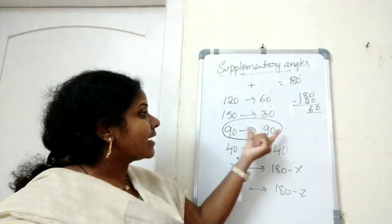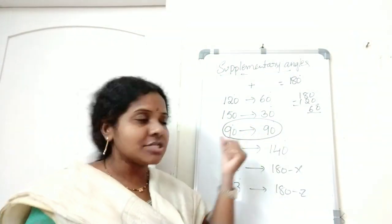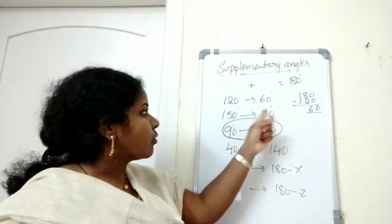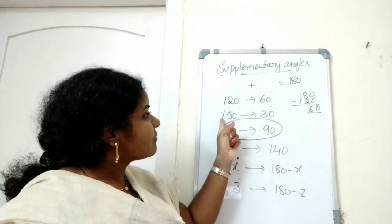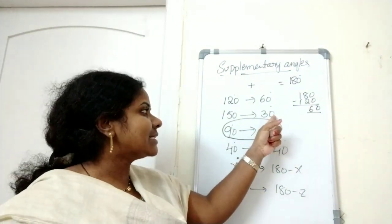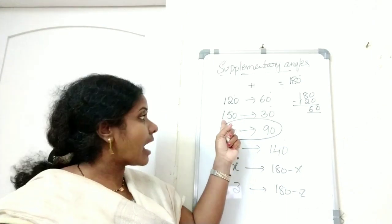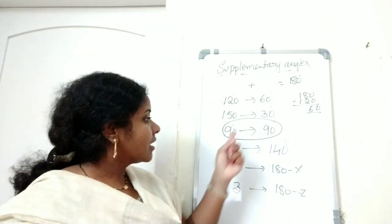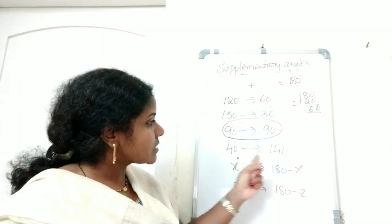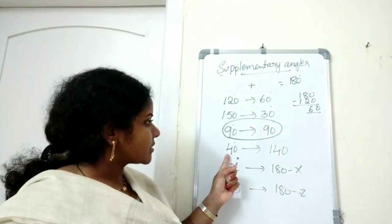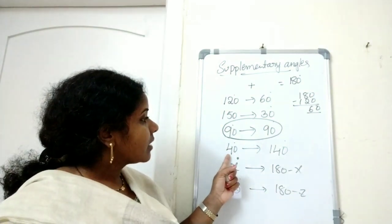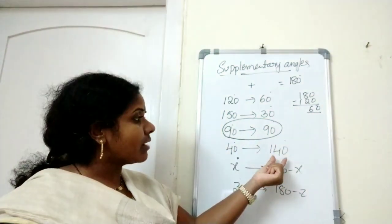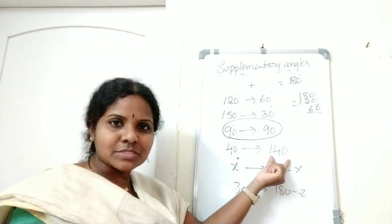So two right angles are always supplementary to each other. If you see these two, here 150 degrees and 30 degrees — 150 is an obtuse angle, 30 is an acute angle. Here 40 degrees and here 140 degrees — 40 is acute and 140 is an obtuse angle.